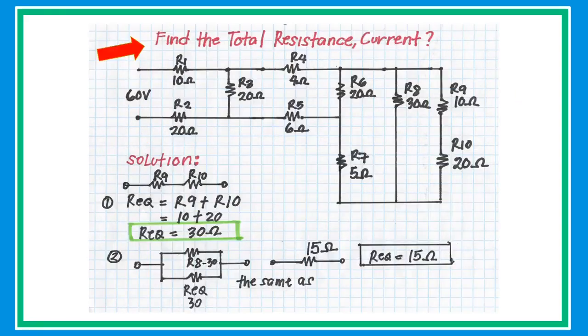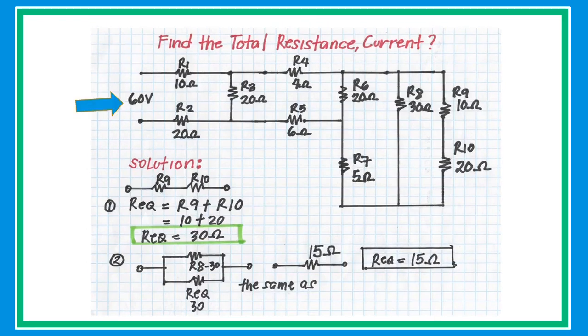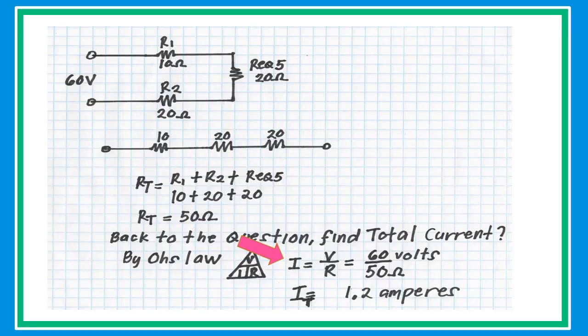Back to the previous equation, find the total resistance and current. Given that the voltage is 60 volts and total resistance is 50 ohms, using Ohm's Law — I equals V over R — the total current is 1.2 amperes.